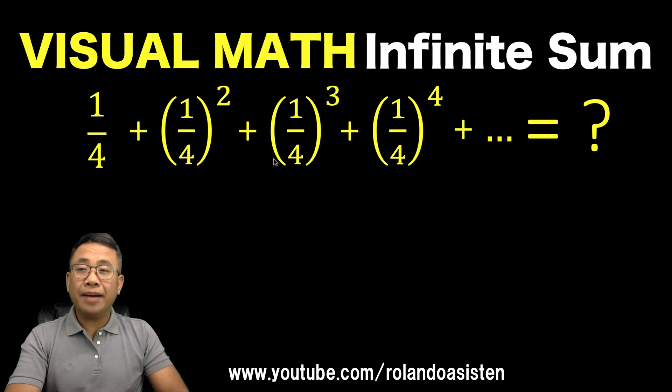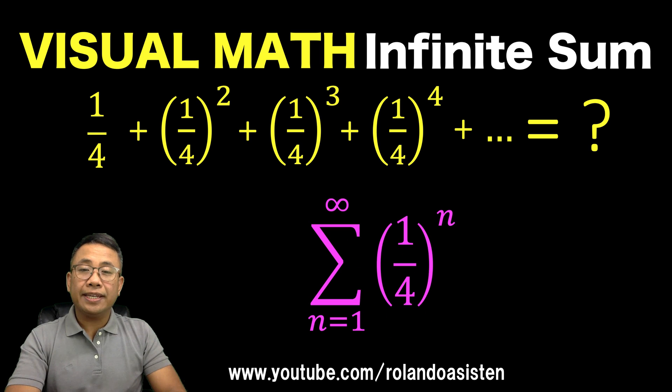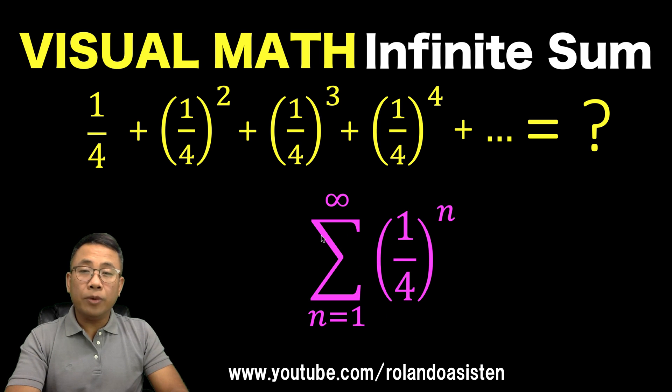Now this kind of repetitive sum can be written in a shortcut method this way. It's the sum of (1/4)ⁿ where our n starts from exponent 1, exponent 2, exponent 3, exponent 4 until infinity.